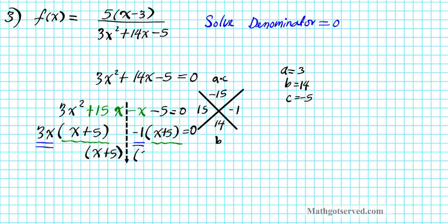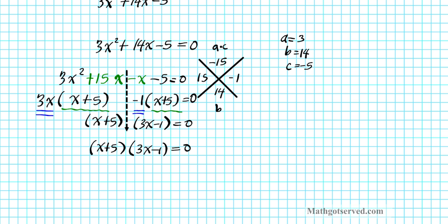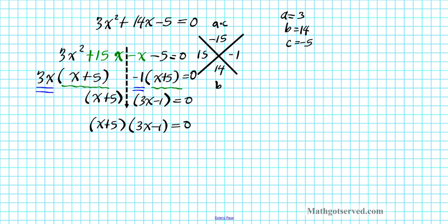So the factored form is x plus 5 times 3x minus 1 equals 0. We now have a situation similar to problem number 2. We use the zero product property, setting both factors equal to zero: x plus 5 equals 0, and 3x minus 1 equals 0.